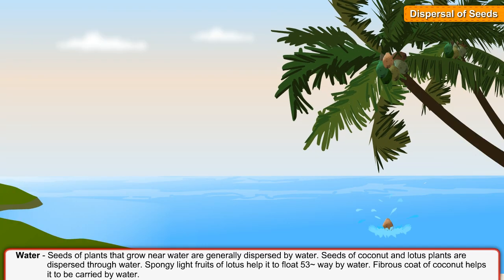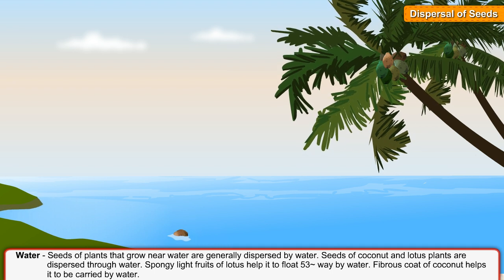Seeds of plants that grow near water are generally dispersed by water. Seeds of coconut and lotus plants are dispersed through water. Spongy light fruits of lotus help it to flow away by water. The fibrous coat of coconut helps it to be carried by water.